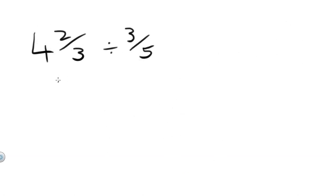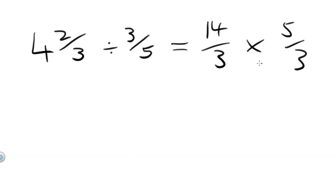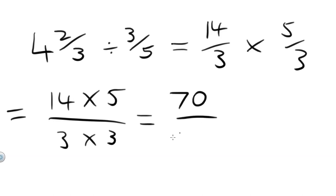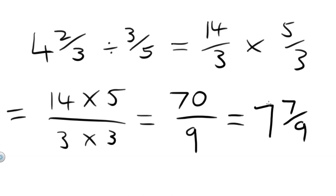What if we have a mixed fraction in our problem? 4 and 2 thirds divided by 3 fifths. Well, we do the same thing, except that we have to convert the mixed fraction to an improper fraction. To do that: 4 times 3 equals 12, plus 2 equals 14. So 14 over 3 is the same as 4 and 2 thirds. Times by the reciprocal of 3 fifths, which is 5 over 3. So 14 thirds times 5 over 3. Multiplying those together, tops by tops, bottoms by bottoms: 14 times 5 over 3 times 3. 14 times 5 equals 70, and 3 times 3 equals 9. 70 over 9. To convert that to a mixed fraction, how many 9s go into 70? Well, 7 nines are 63, so we put a 7 out the front with a remainder of 7, and we keep the denominator of 9. So the final answer is 7 and 7 ninths.